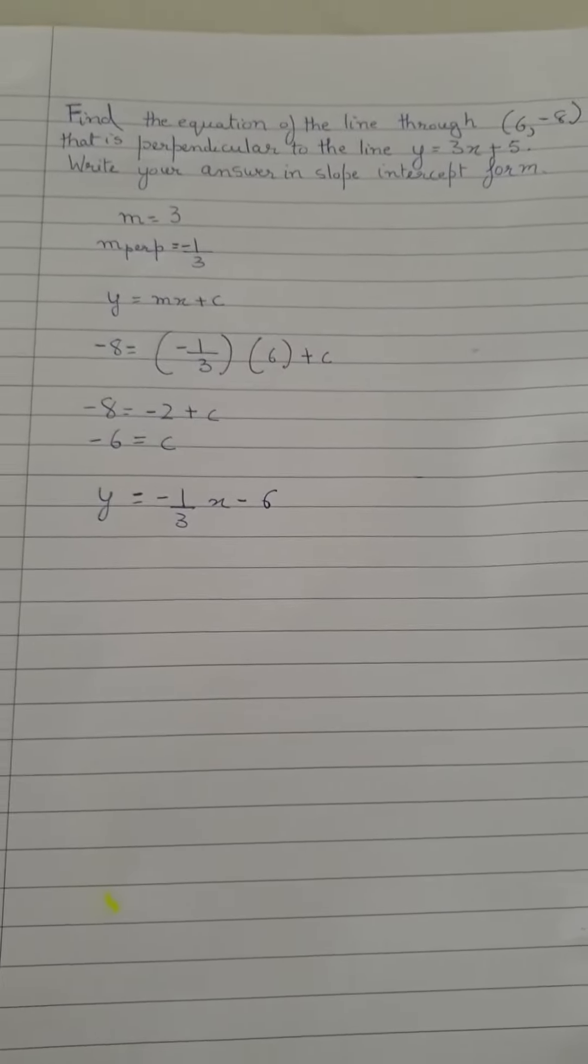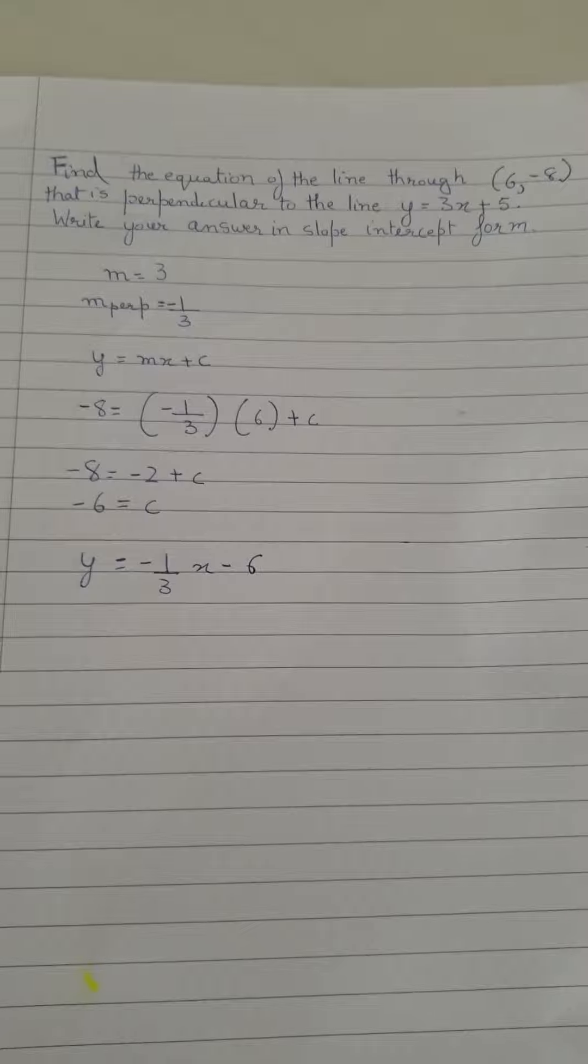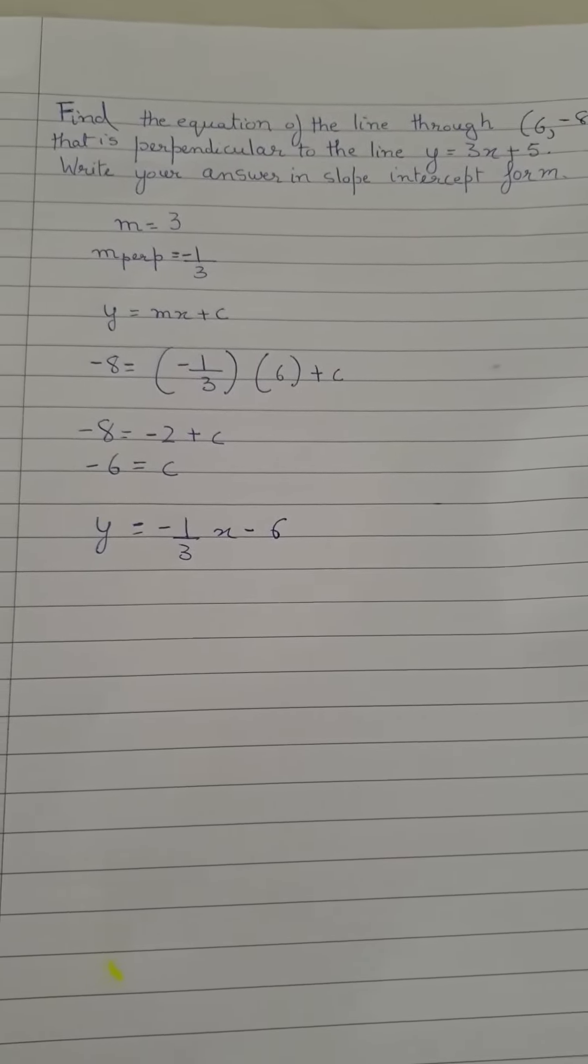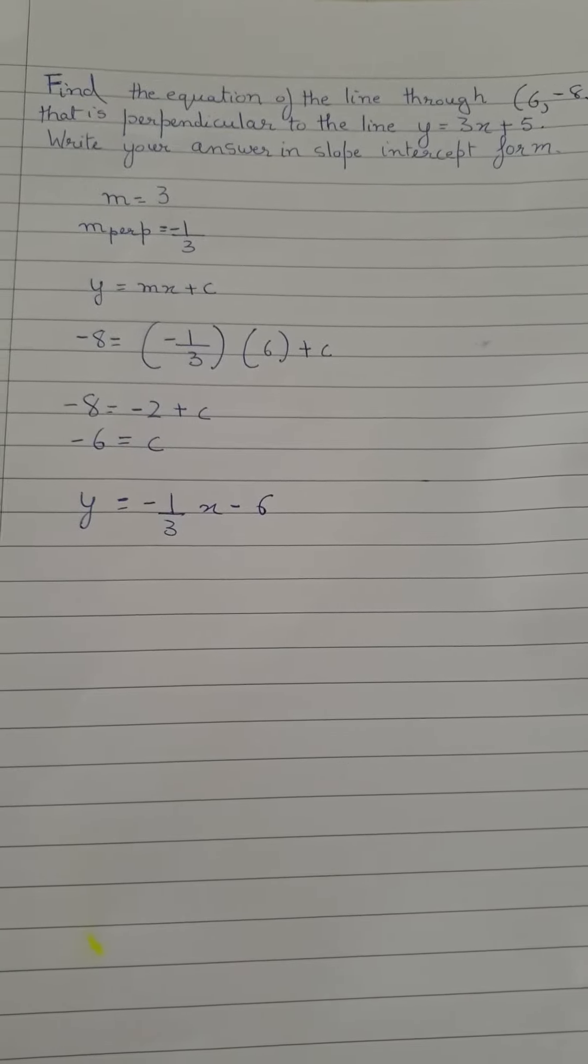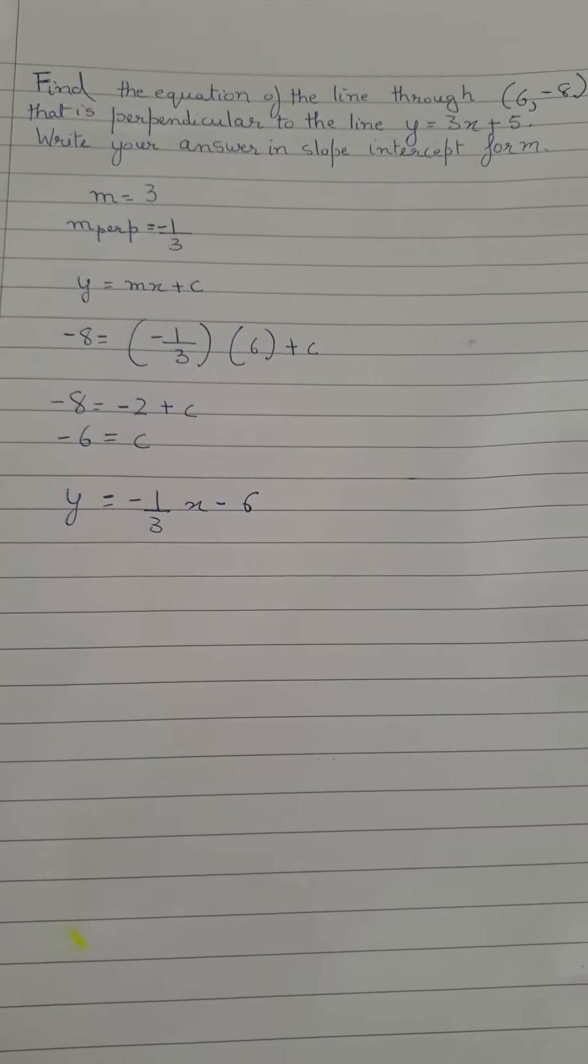Find the equation of the line through (6, -8) that is perpendicular to the line y = 3x + 5. Write your answer in slope-intercept form.